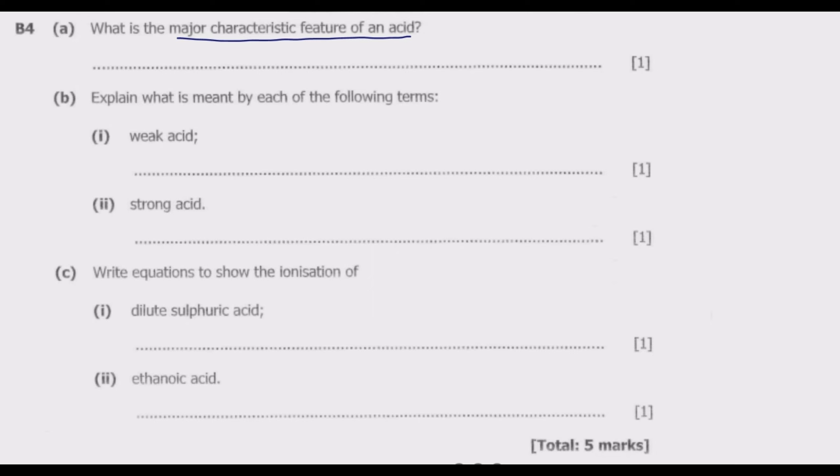A strong acid completely ionizes in water to form hydrogen ions. Remember, weak acids partially ionize in water to form hydrogen ions, while a strong acid is an acid that completely ionizes in water to form hydrogen ions.